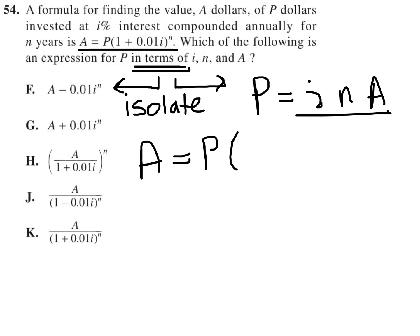So what we have in the original equation, A equals P(1 plus 0.01I) to the N, this is basically or technically A in terms of P, I, and N because A is isolated.